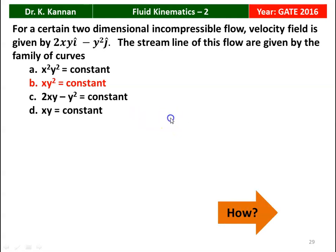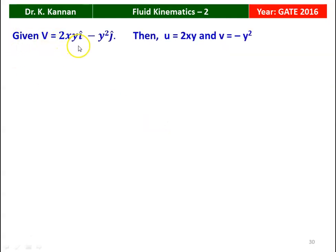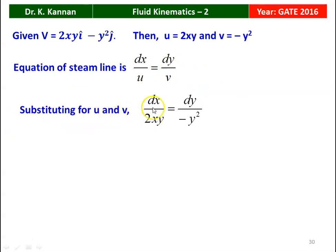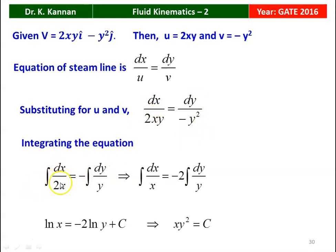The answer is xy² = constant. From the velocity vector, u = 2xy and v = −y². The streamline equation is dx/u = dy/v, so dx/(2xy) = dy/(−y²). One y cancels, giving ∫dx/(2x) = −∫dy/y. Integrating: log x = −2 log y + constant. Rearranging and simplifying, the answer is xy² = constant.